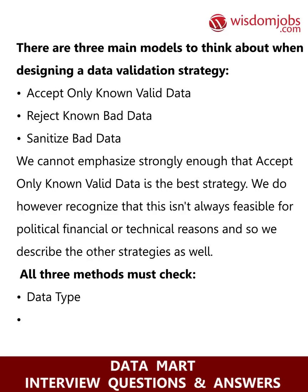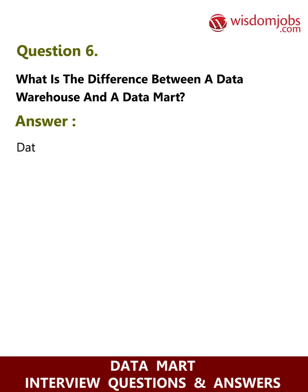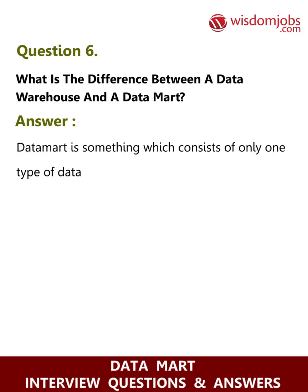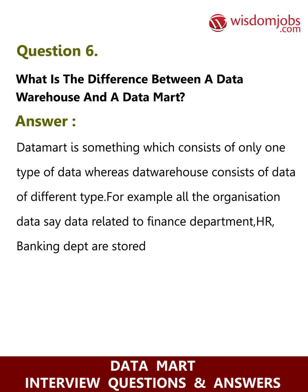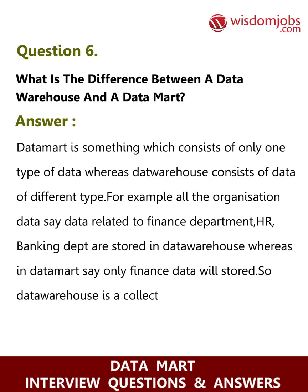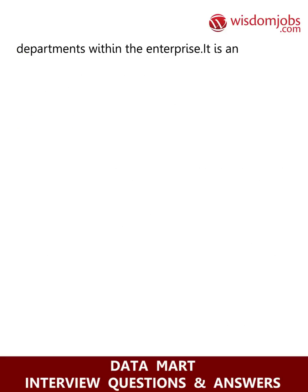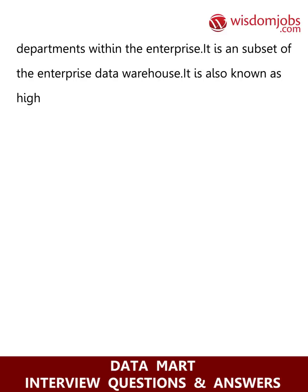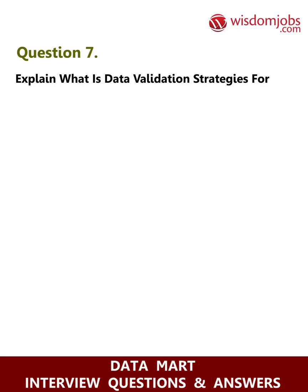There are three main models to think about when designing a data validation strategy: accept only known valid data, reject known bad data, and sanitize bad data. We strongly emphasize that accepting only known valid data is the best strategy, though we recognize this isn't always feasible for political, financial, or technical reasons. All three methods must check data type, syntax, and length. Question 6: What is the difference between a data warehouse and a data mart? Answer: A data mart consists of only one type of data, whereas a data warehouse consists of data of different types. For example, all organization data related to finance, HR, and banking are stored in a data warehouse, whereas a data mart stores only finance data. A data mart is a subject-oriented database supporting individual department needs within the enterprise, and is a subset of the enterprise data warehouse, also known as a high-performance query structure.